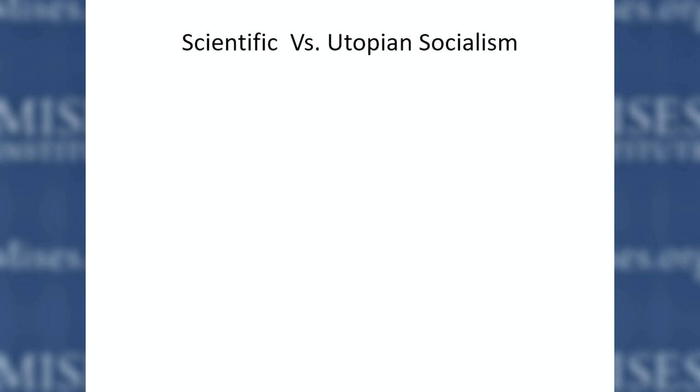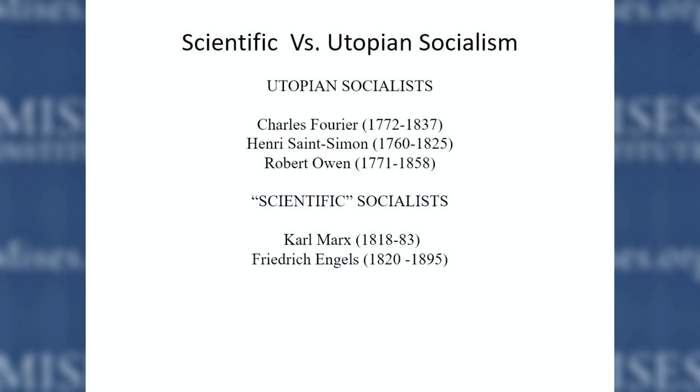There were two kinds of socialisms before Mises wrote: scientific versus utopian socialism. You could refer to a lot of the progressives today as utopian socialists — they all have different schemes in their minds about how they would like society to look after the great transition through mass democracy. Utopian socialists back then included two famous French writers, Charles Fourier and Henri Saint-Simon, and then a Scottish writer, Robert Owen. The scientific socialists were, of course, Karl Marx and Friedrich Engels.